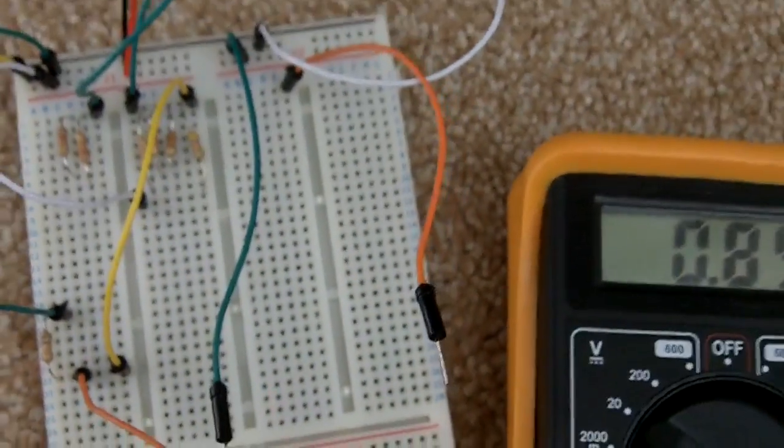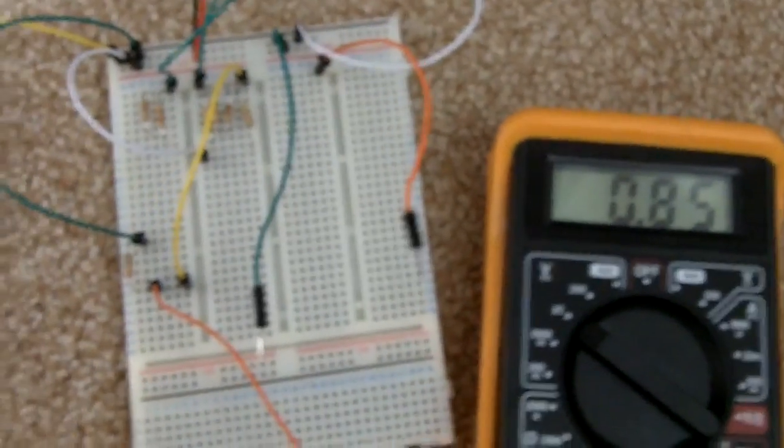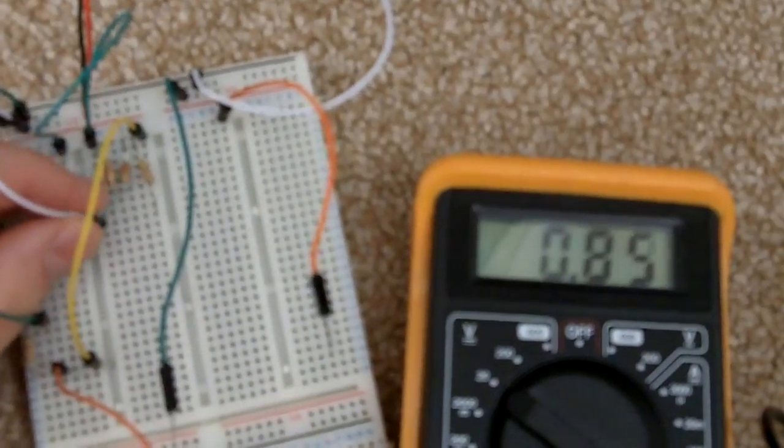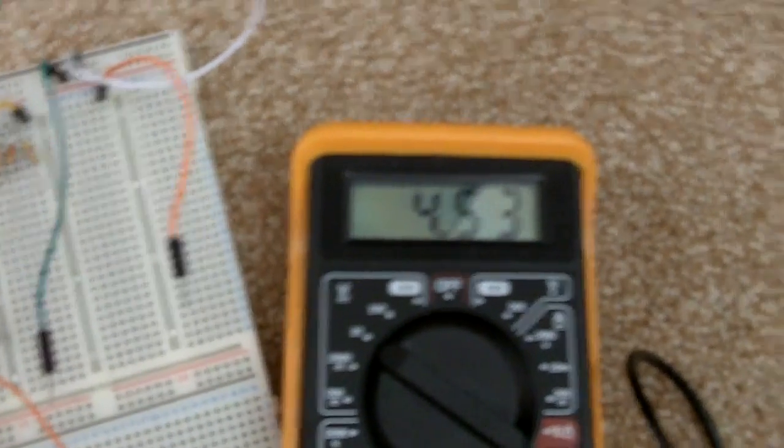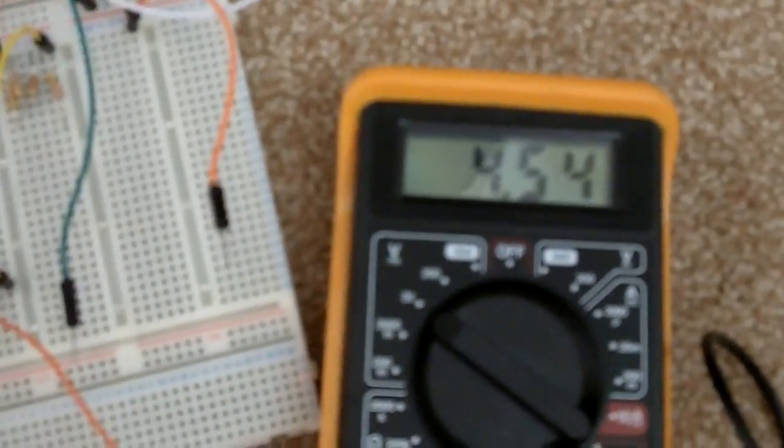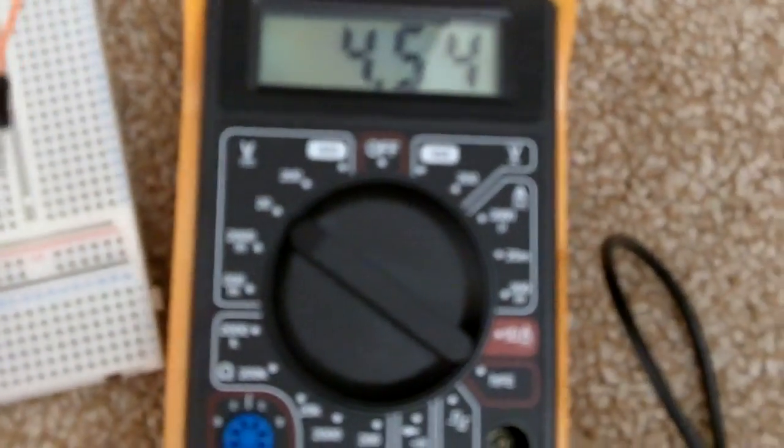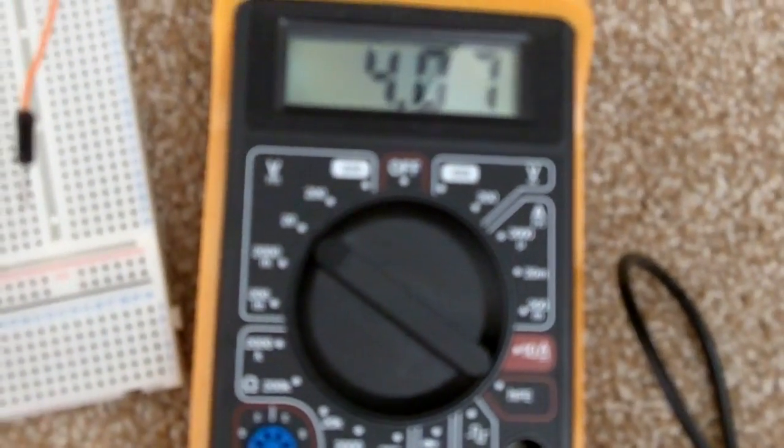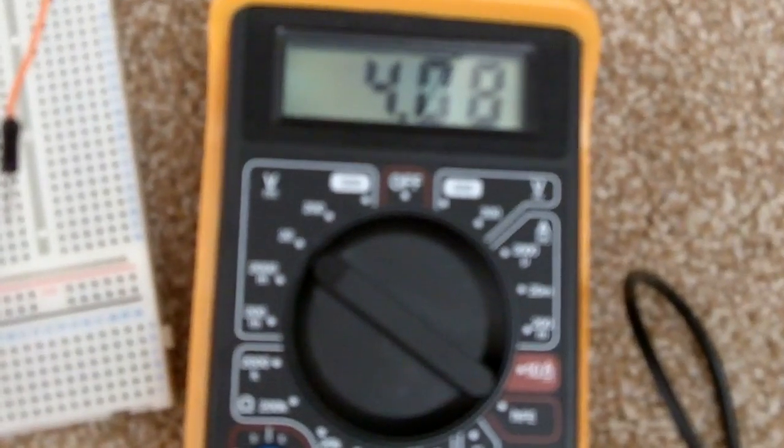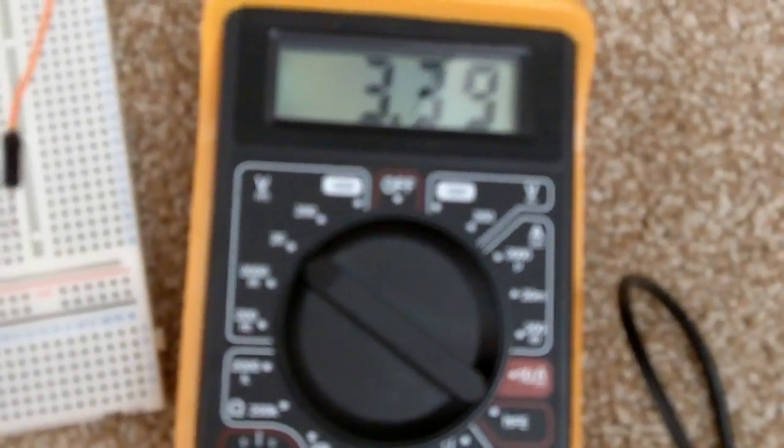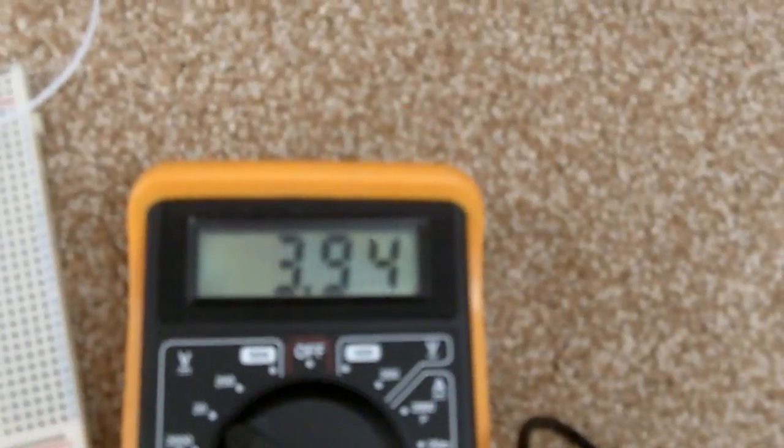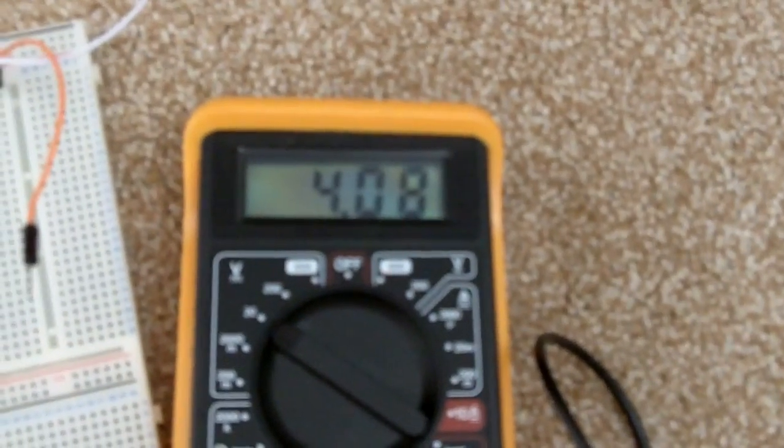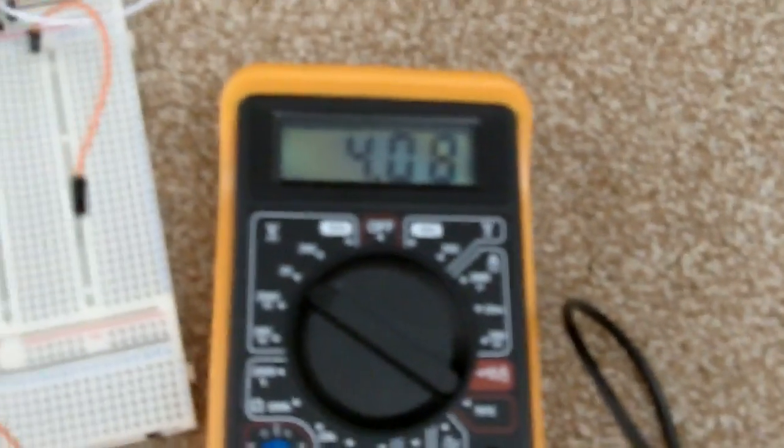If I show you the multimeter, as I go through and change these, this is the 1k which would be position 6. And then we go to the 2.2k, and so on. That gives us six different voltage ranges that we want to look out for in the code, and use that to decide what position the switch is in.